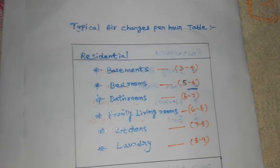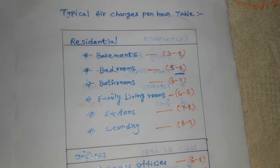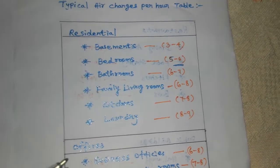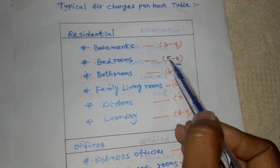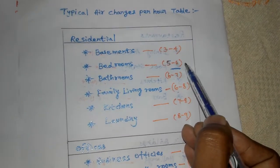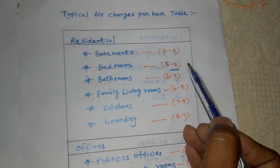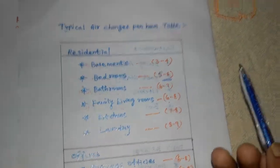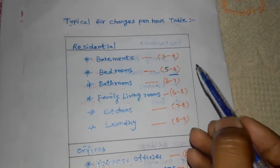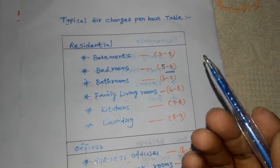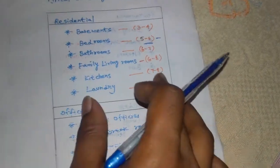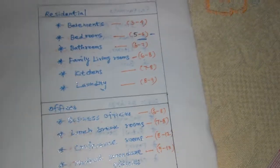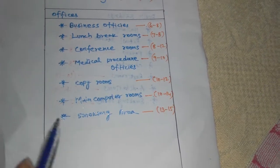Here is a typical air changes per hour table. For residential spaces: basement, bedroom, bathroom, kitchen, and laundry are listed. A bedroom requires 5 to 6 air changes per hour as a standard value. This value changes based on room temperature. Use this table to select the right value when calculating CFM or choosing an exhaust fan.